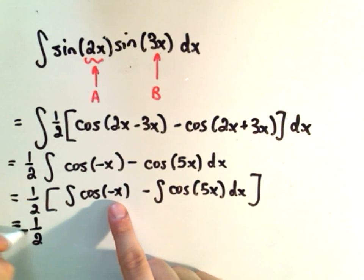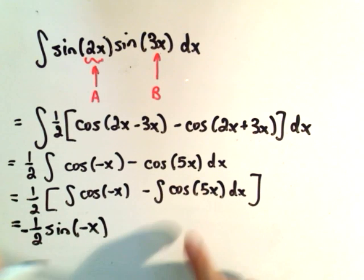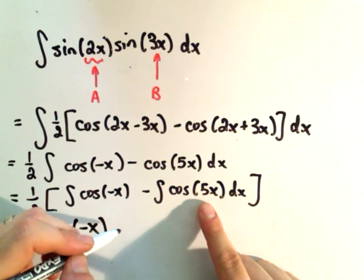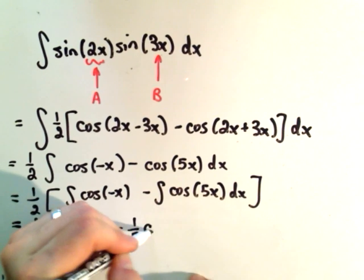That'll give you negative sine of u, which would be negative x. And for this part, you'll end up getting that same one-fifth term out front. So you'll have minus one-fifth,